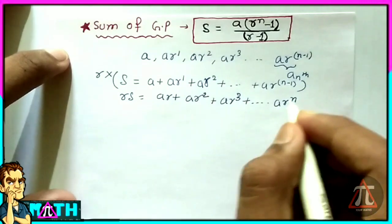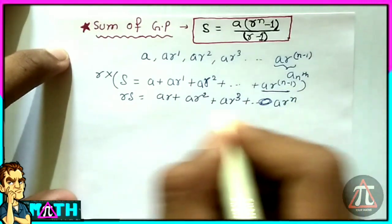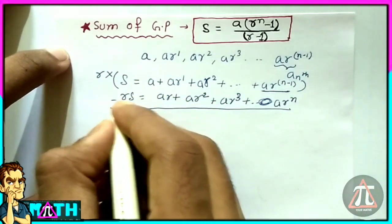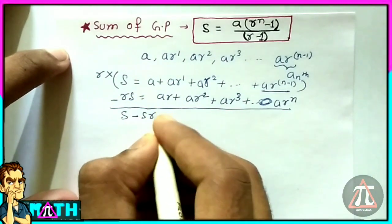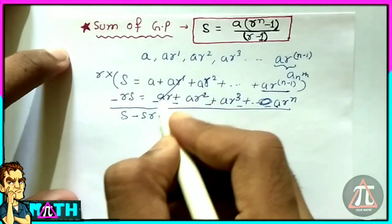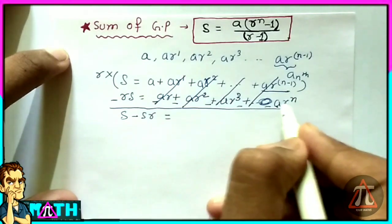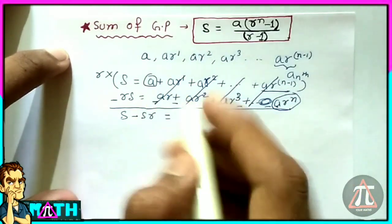Now remember one thing: this ar to the power (n-1) becomes something here. Now when you subtract these two equations, you get S minus rS is equal to... all these terms cancel out, all of them cancel. Now, so it becomes...